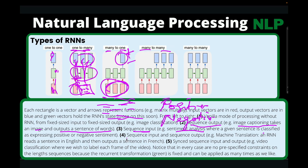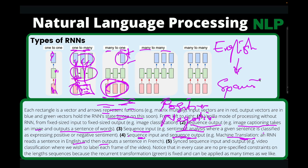Then we also have many-to-many — sequence input and sequence output, several inputs and several outputs. For instance, machine translation: you have words in English and then you translate them to Spanish. From English, it's going to be several words, and then we translate it to Spanish, which is also going to be several words. So, many-to-many.